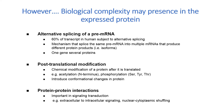Reversible phosphorylation of proteins is another important regulatory mechanism. It results in a conformational change in the structure of many enzymes and receptors, causing them to become activated or deactivated. Finally, qualitative differences in the interactions between proteins and their integration into pathways may contribute significantly to the differences in biological complexity among organisms.